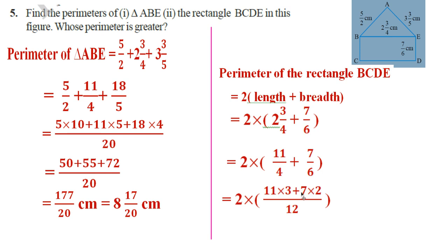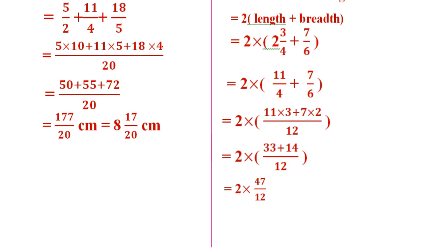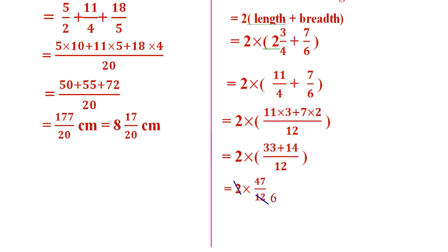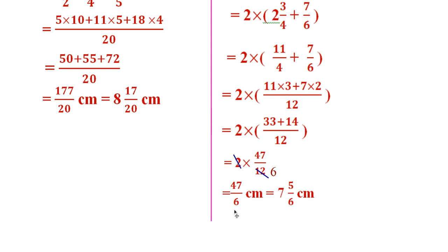The numerator is 11 × 3 + 7 × 2, that is 33 + 14, divided by 12. That gives 2 × 47/12. Now 2 and 12 cancel — 2 goes 6 times in 12 — so we get 47/6 centimeter, which can be written as 7 5/6 centimeter.